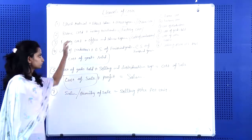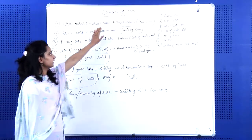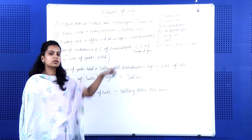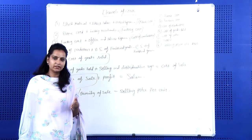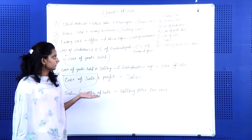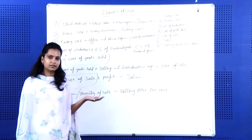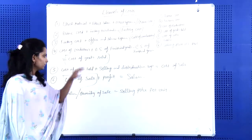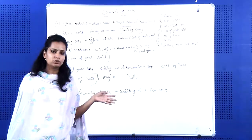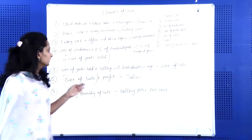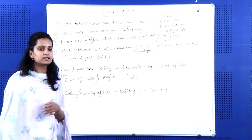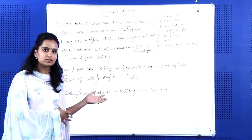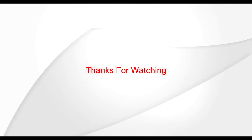Direct material, direct labour, and direct expenses together equal prime cost. Indirect material, indirect labour, and indirect expenses form total overheads. That is the basic module of the elements of cost. Further, we will discuss another topic related to these cost elements. Thank you.